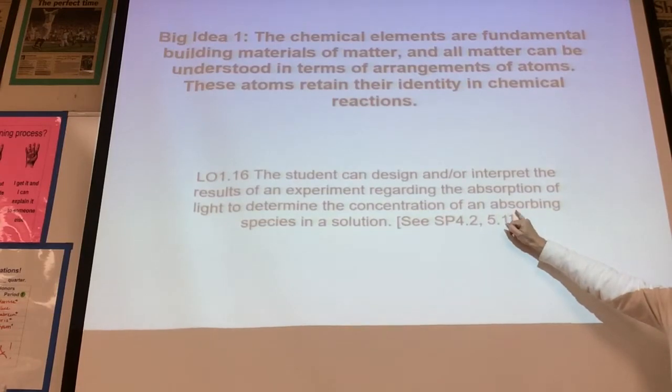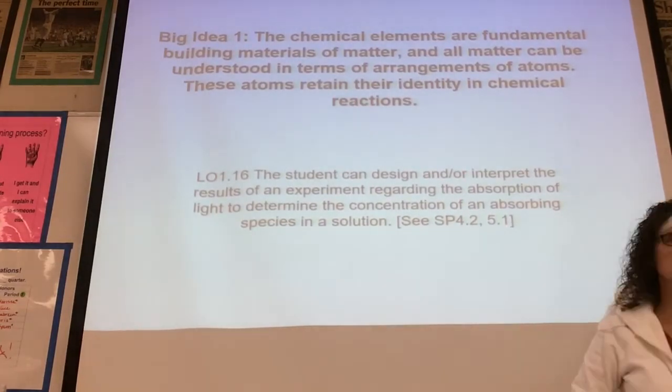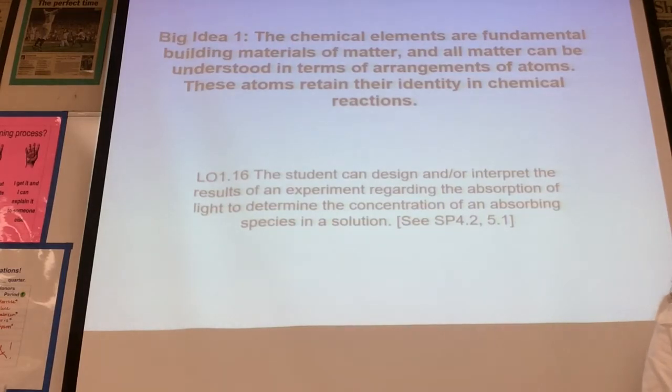It falls into Big Idea 1. The learning objective is: you should be able to design and interpret the results of an experiment regarding the absorption of light to determine the concentration of an absorbing species in solution. The reaction we ran in the lab where iron-3-ion reacted with thiocyanate ion to generate a complex ion, you're going to run that again but analyze it differently. You'll see that the deeper the color of the solution, the more concentrated the solution. You can envision this with lemonade—if you taste it and it's too tart, you add water to dilute it and the color would be lighter. It has a lower concentration.